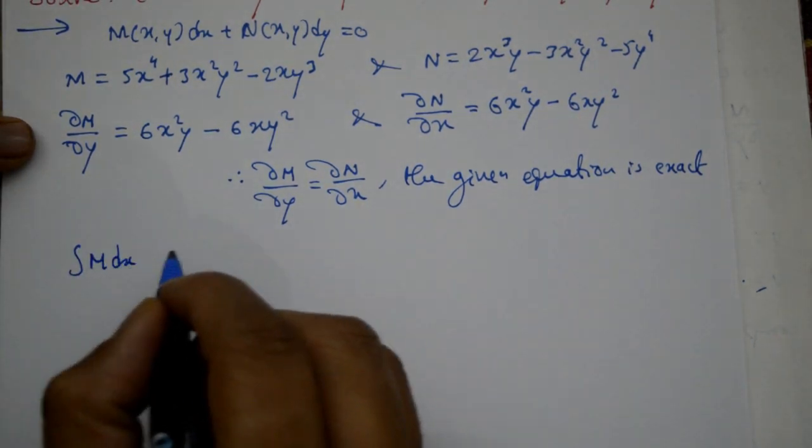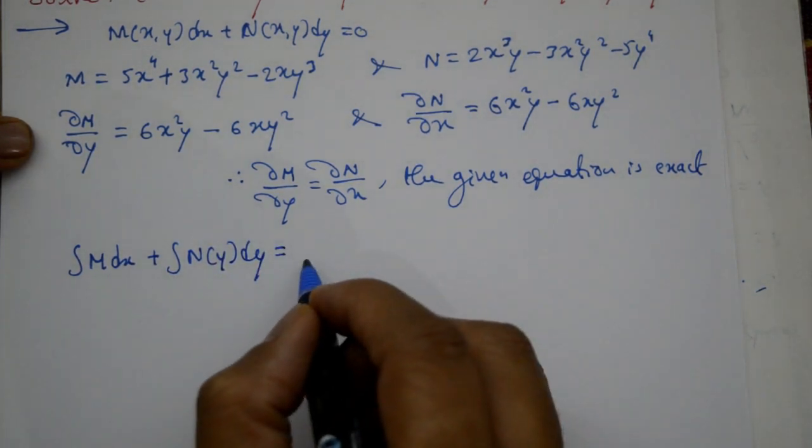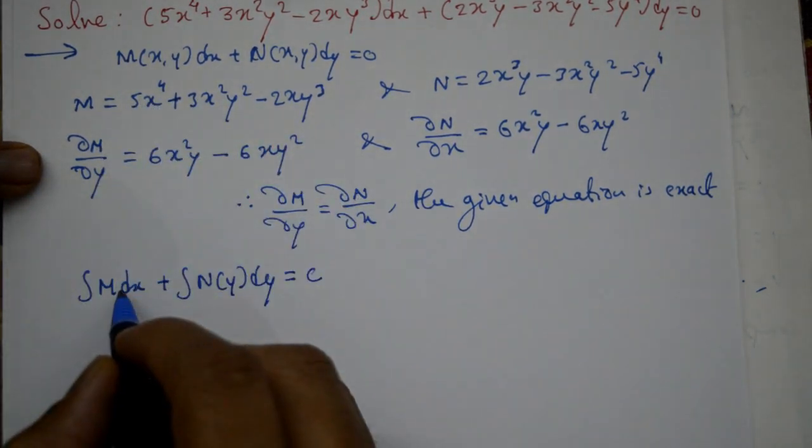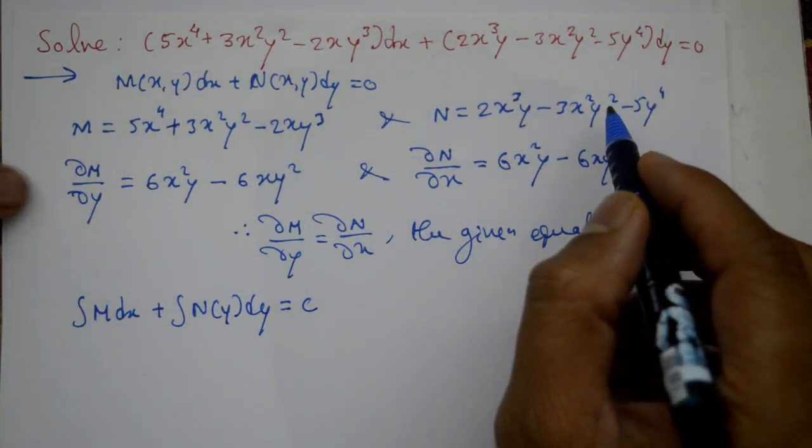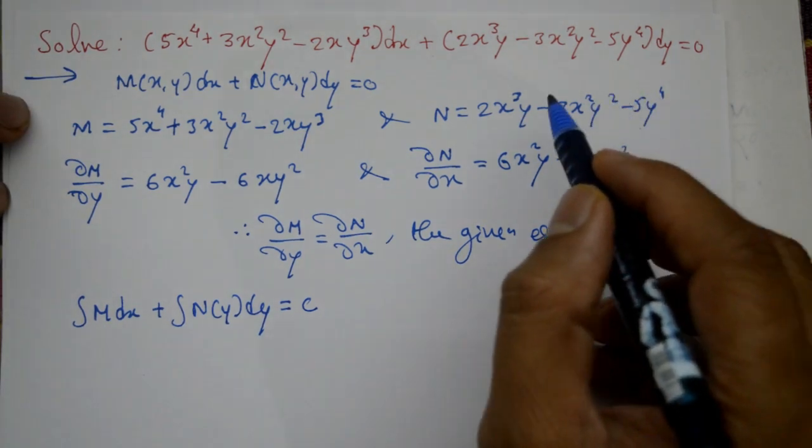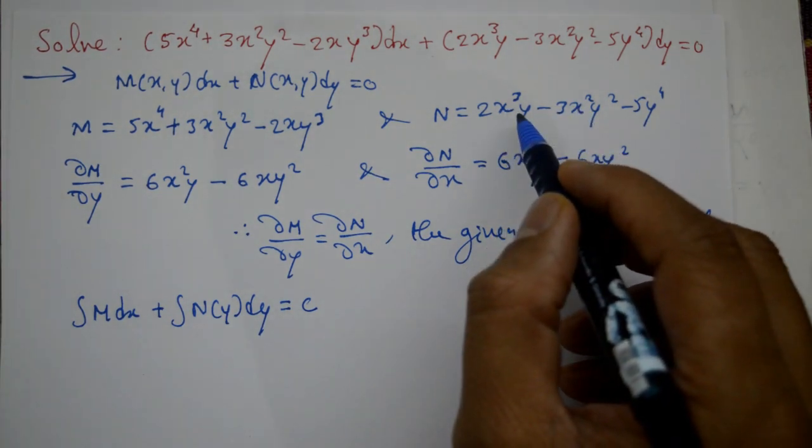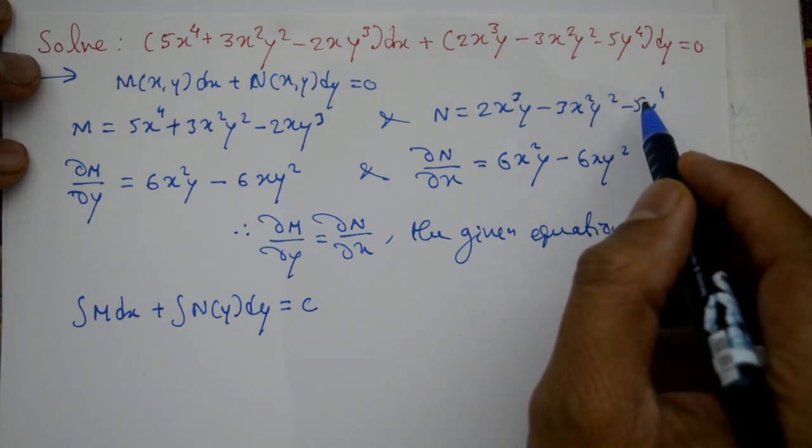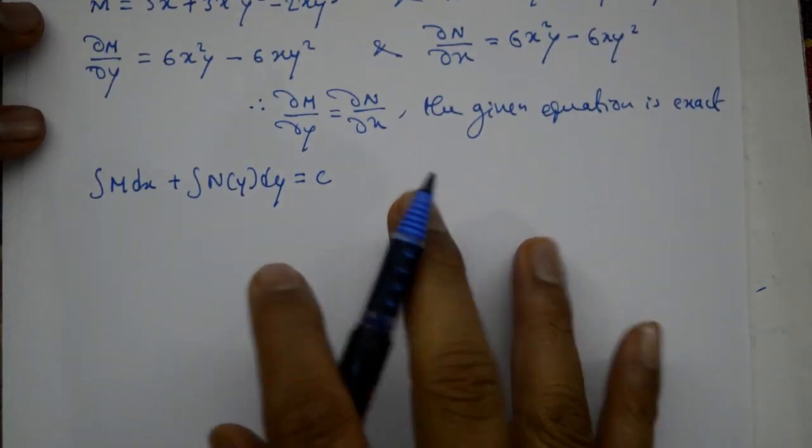If the equation is exact, what do we do? Integration of M dx plus integration of N(y) dy equal to c, the integral constant. N(y) means that term which does not have x variable. If x term is there, x variable is there, we should neglect that. Only pure y variable or number should be taken. In N, the third term has x variable, so not consider this one, only consider this part.